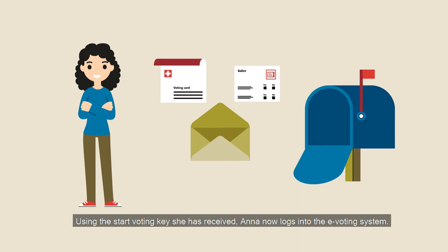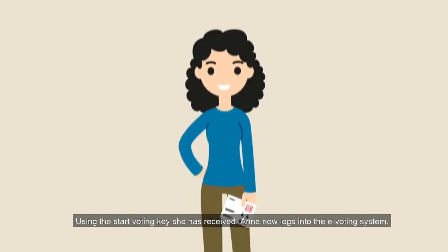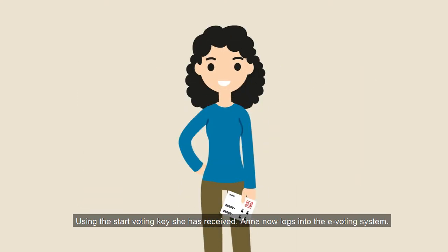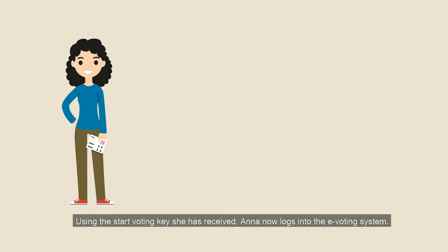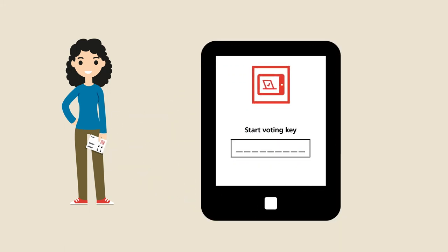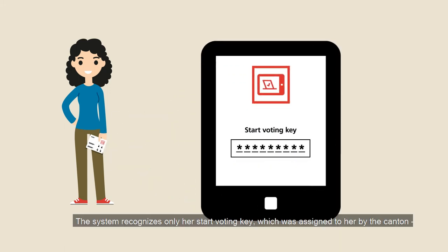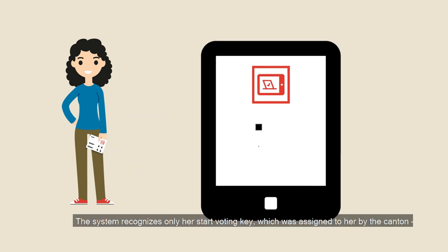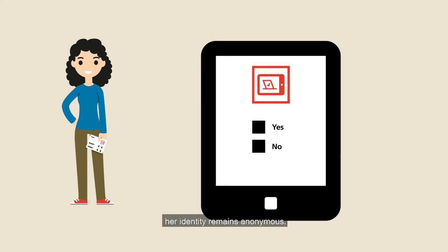Using the start voting key she has received, Anna now logs into the e-voting system. The system recognises only her start voting key, which was assigned to her by the canton. Her identity remains anonymous.